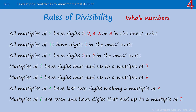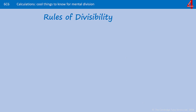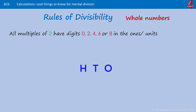Usually in year 5 or year 6, children are introduced to rules of divisibility. Just remember that when we're talking about these rules of divisibility, we're talking about whole numbers. If there's a decimal or a fraction attached to your number, the rule won't be the same.